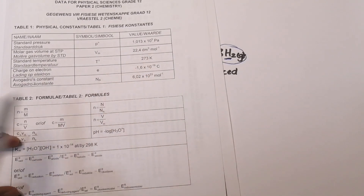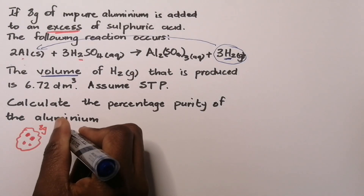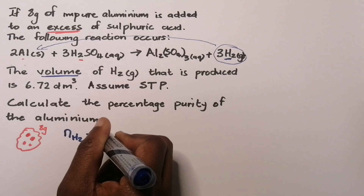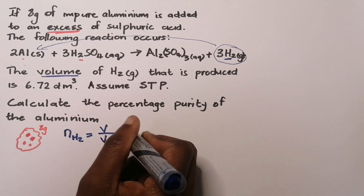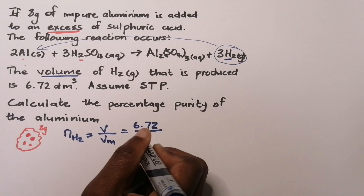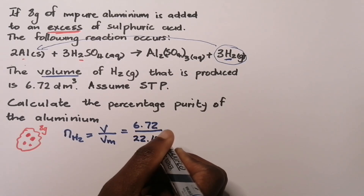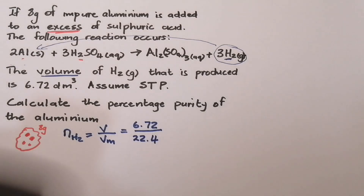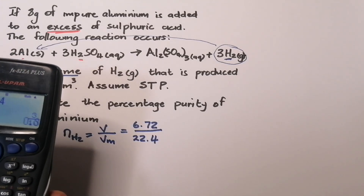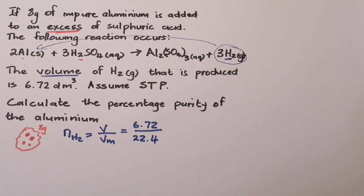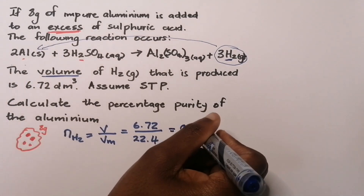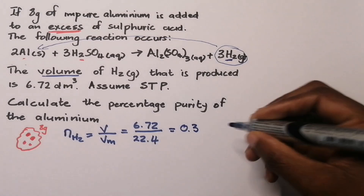So the number of moles of hydrogen equals volume divided by molar volume: 6.72 divided by 22.4, which gives us 0.3 moles. So the number of moles of hydrogen produced is 0.3 moles.